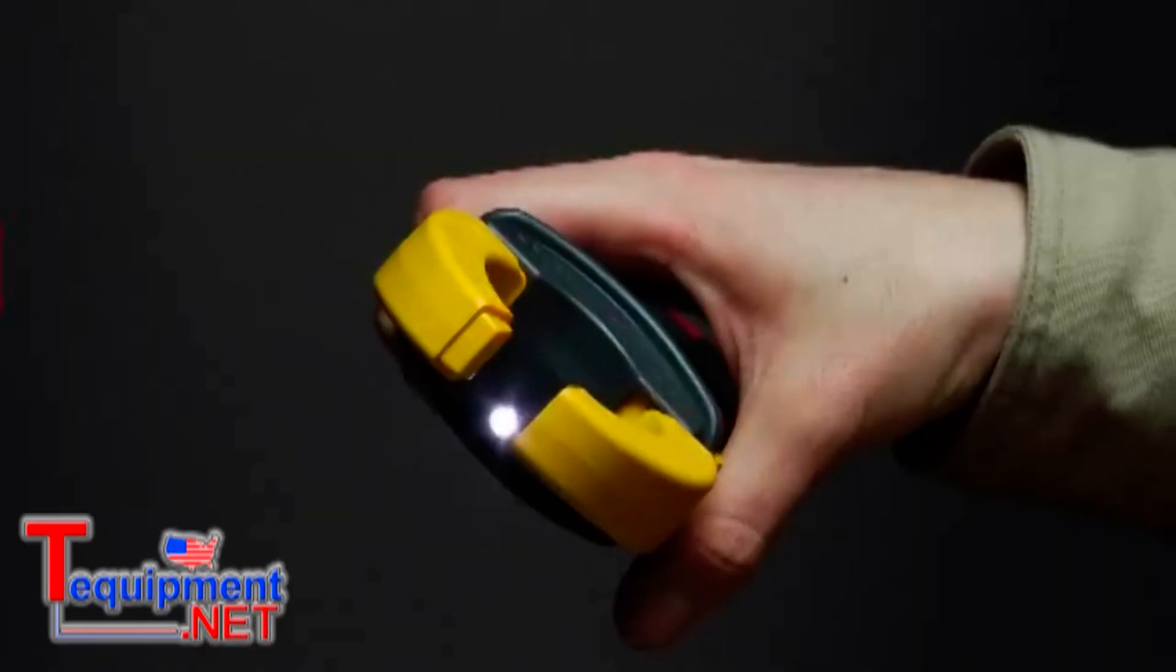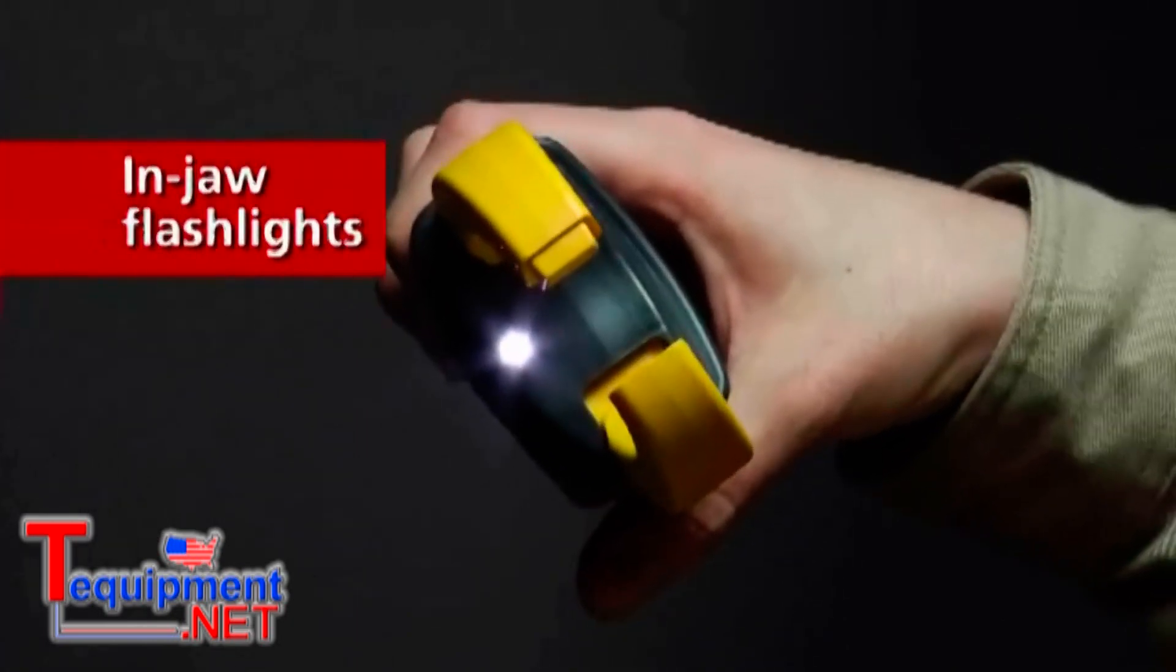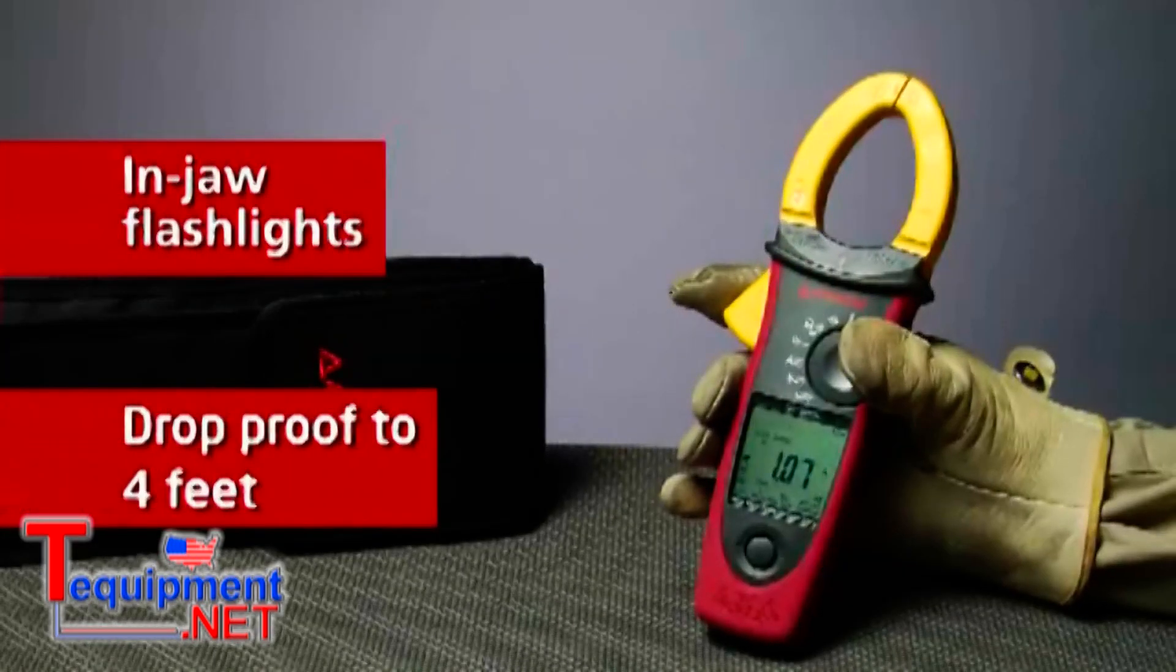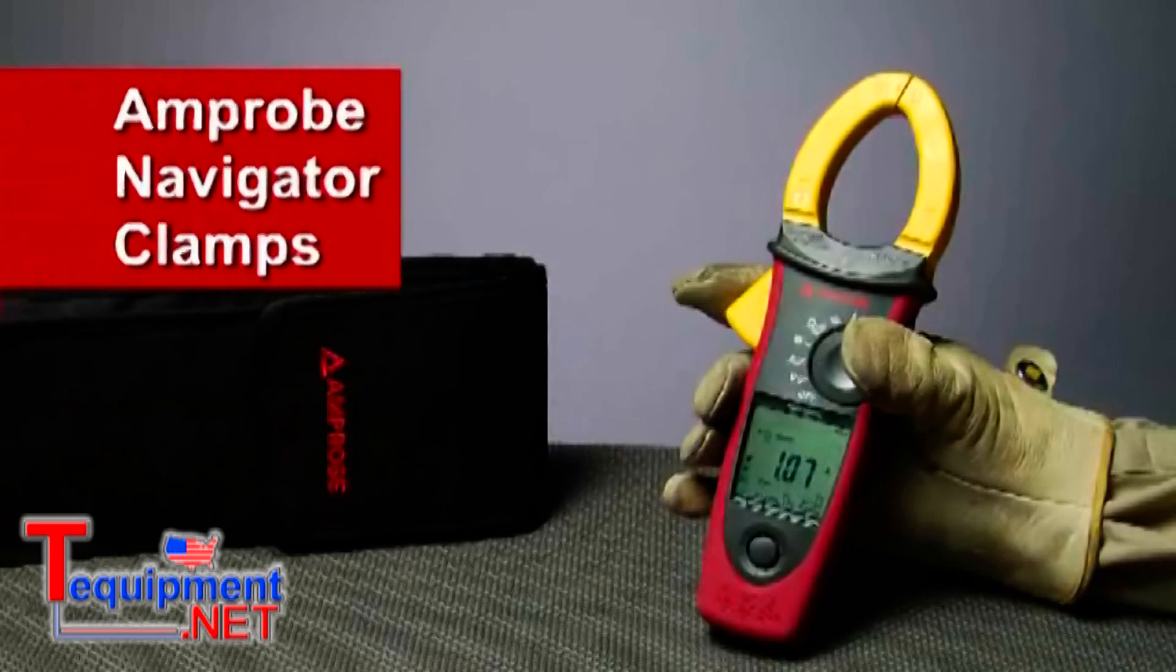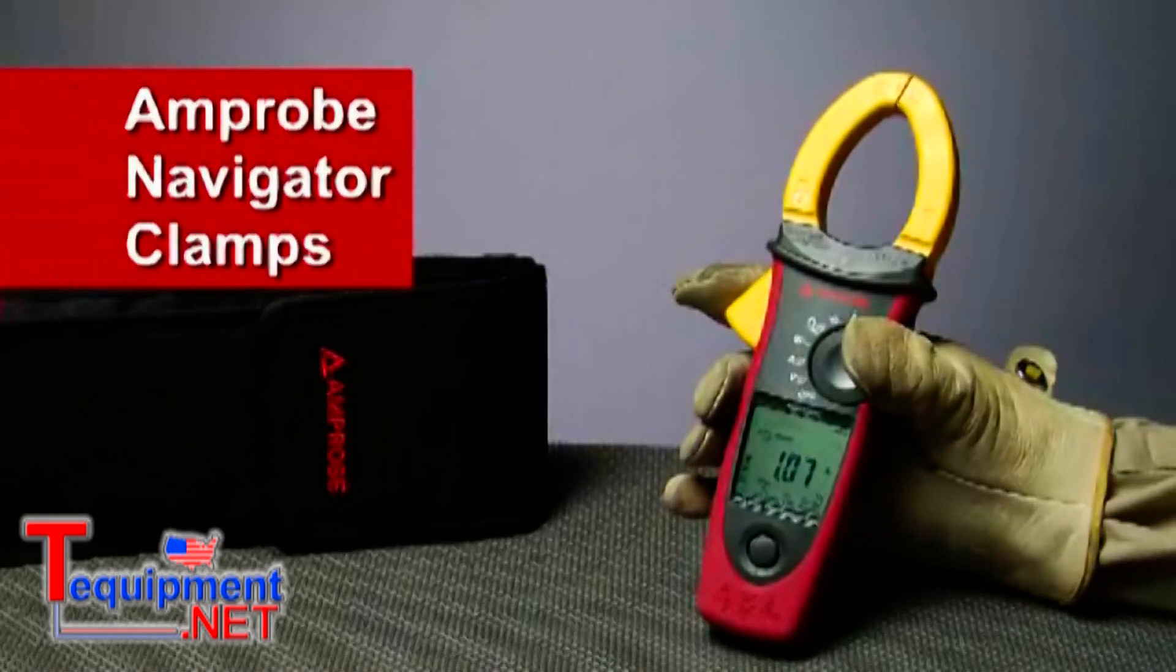The rugged Cat4 rated units are also equipped with in-jaw flashlights and are drop-proof to four feet. Everything you need to take control of your commercial and industrial environments.